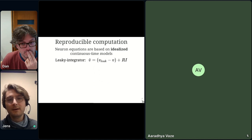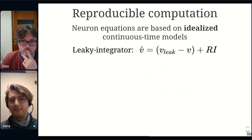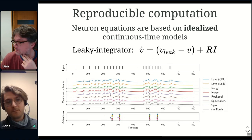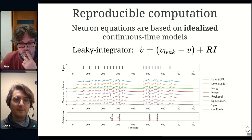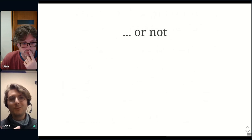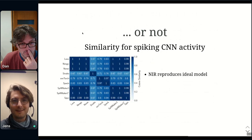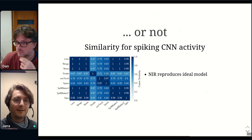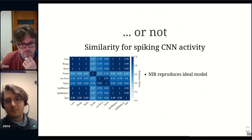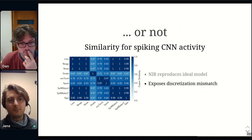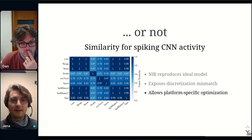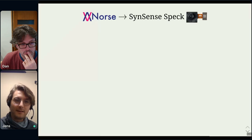Here's an example of a leaky integrator: we stay faithful to the mathematical basis — a leaky integrator with a threshold and a reset — and we plot the trace across different platforms, showing they roughly behave the same. However for a convolutional network, comparing similarity measures of activity across different platforms, some are more similar than others. NIR can reproduce an ideal computational model, but importantly it also exposes mismatches in the discretization schemes of different digital platforms, allowing platform-specific optimization.